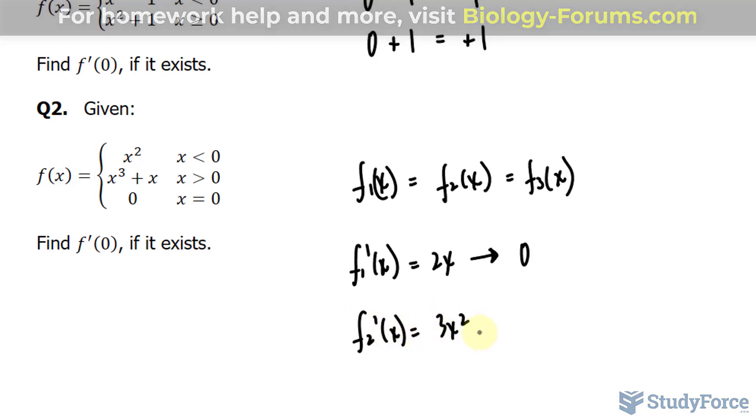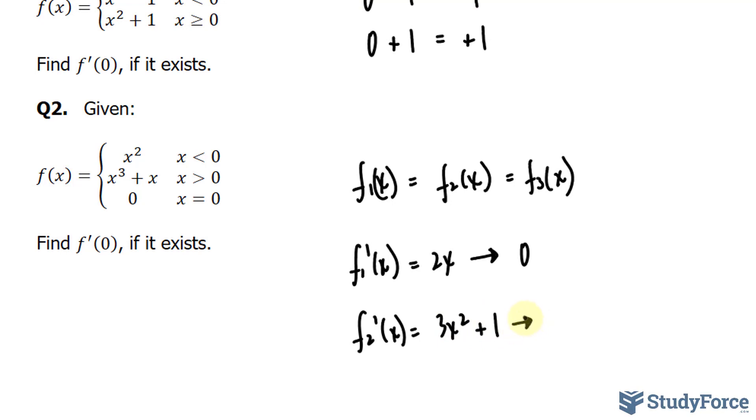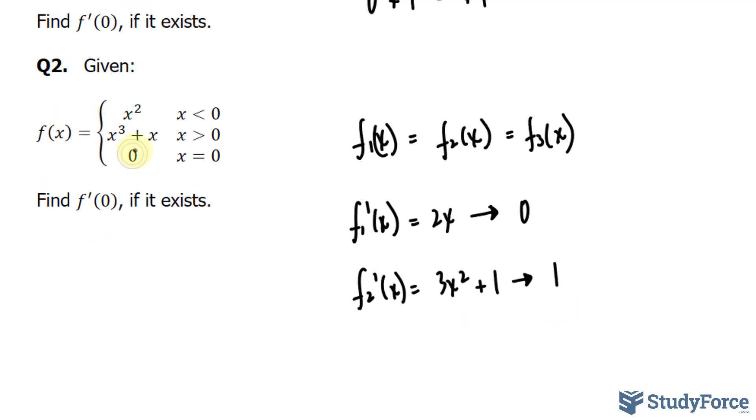Substituting zero into this x gives us an output of positive one. And lastly, taking the derivative of this constant zero gives us zero.